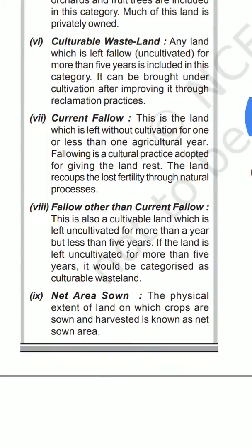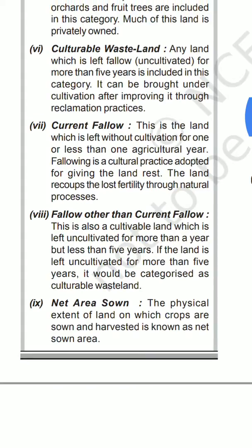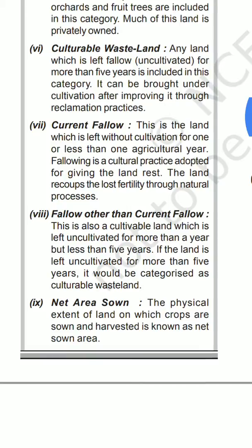Any land left fallow for more than five years is included in the culturable wasteland category. It can be brought under cultivation after improving it through reclamation processes. So the three categories covered are: current fallow, fallow other than current fallow, and culturable wasteland.